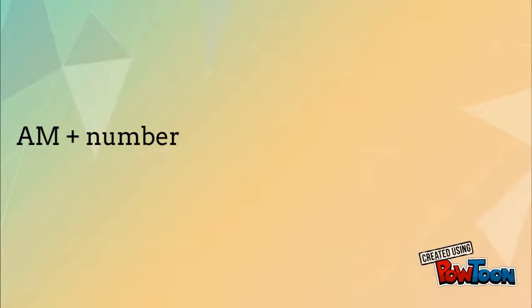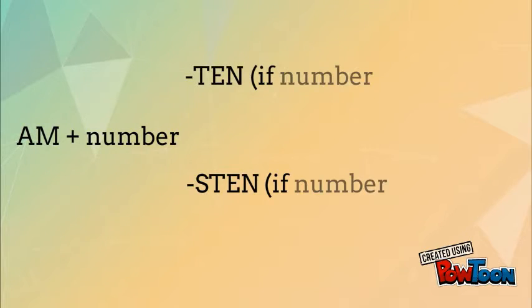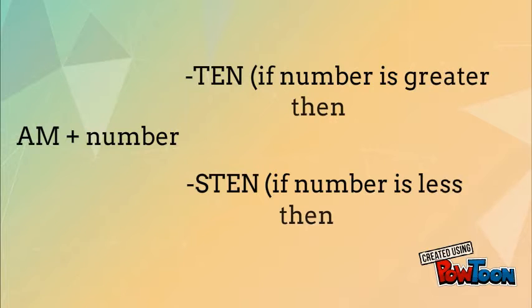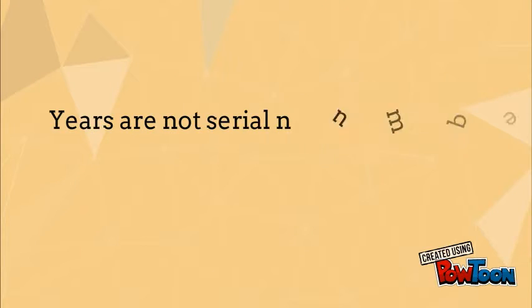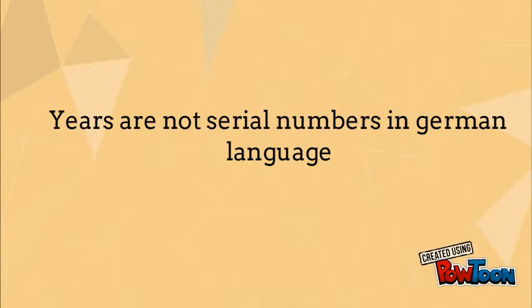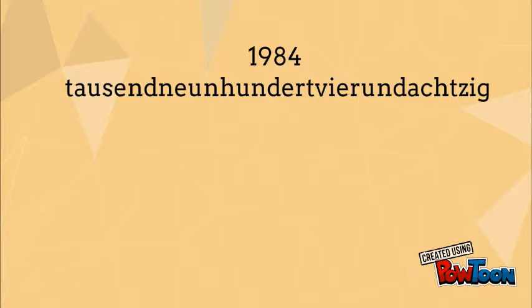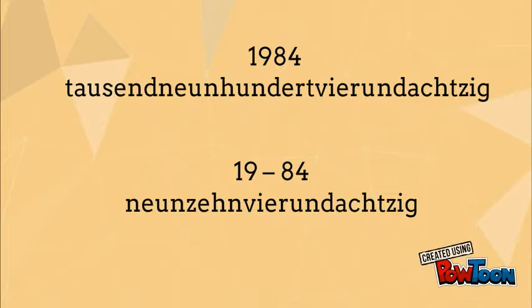When we want to specify a certain date, we use the word "am" and the number to which we add the extension "-ten" or "-sten". Years in German are not serial numbers and they stay in their original form. We can read a year in two ways: 1944, or short form 1984. We always write numbers down as one word.